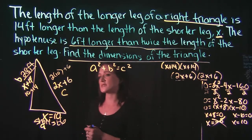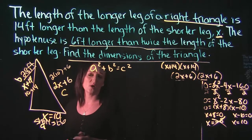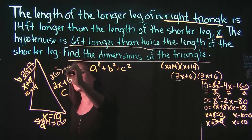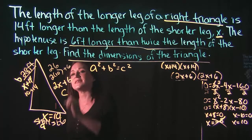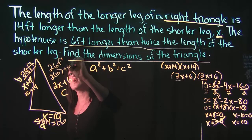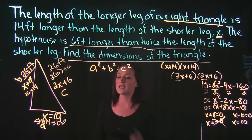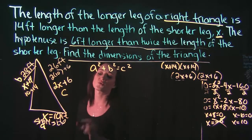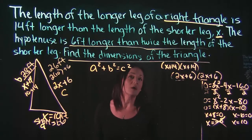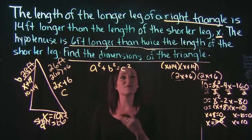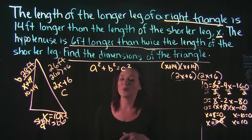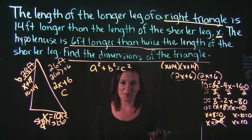We can plug in 10 for x, simplify this and figure out what our hypotenuse is. 2 times 10 is 20 and 20 plus 6 is equal to 26. So we have 26 feet, 28 feet, and 10 feet for our three sides of our triangle, which means we found the dimensions of the triangle. That's it for this problem.